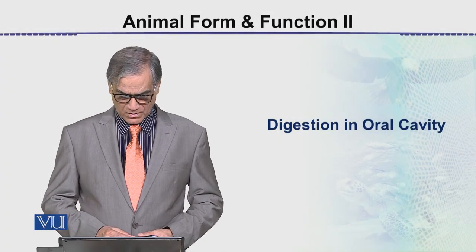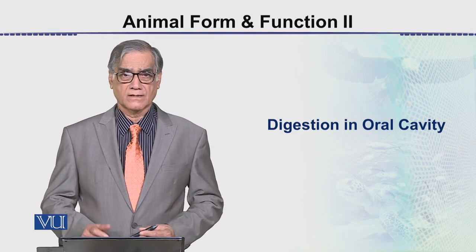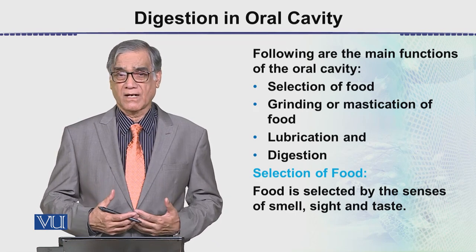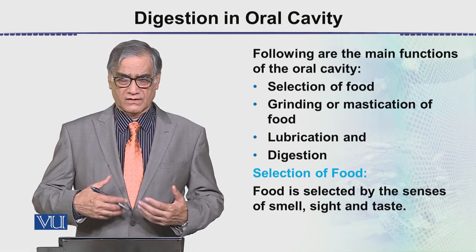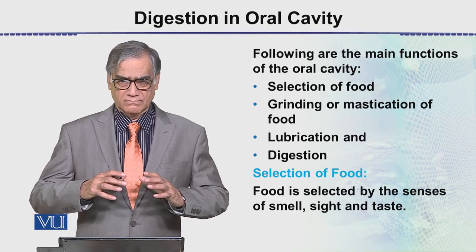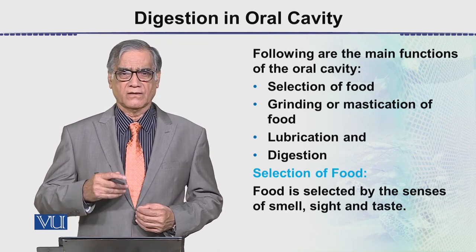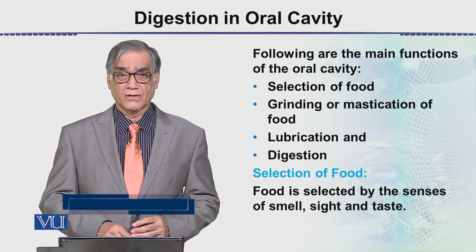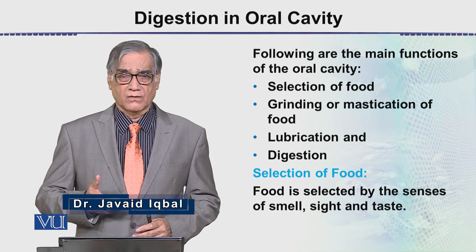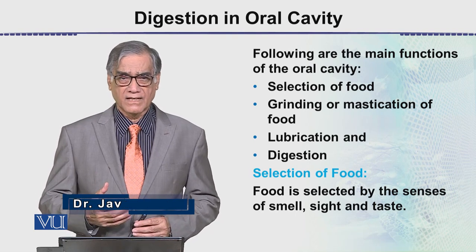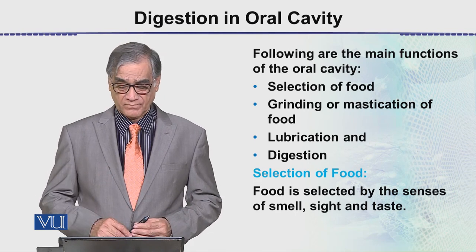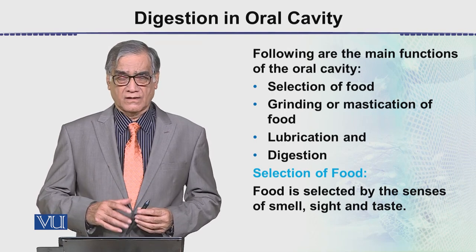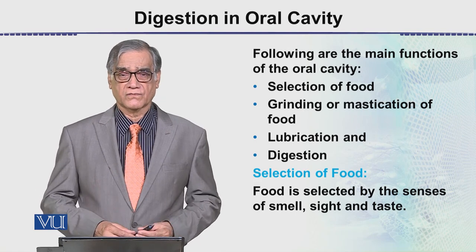We are discussing animal form and function 2, or in this module we will be discussing digestion in the oral cavity. The oral cavity is the first part where digestion occurs in the GI tract. This oral cavity has already been discussed — the front is the mouth opening, which is opposite to the pharynx opening. The sides are the cheeks, the roof is the hard palate, and the lower part is below the tongue. This module will discuss what type of digestion occurs and what the functions of this oral cavity are.